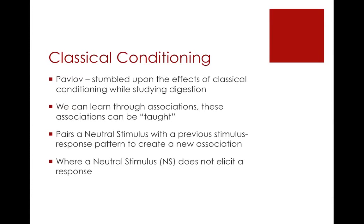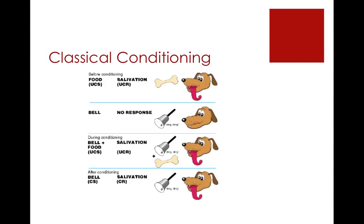In classical conditioning, we pair a neutral stimulus with a previous stimulus-response pattern to create a new association. A neutral stimulus does not elicit a response on its own — prior to the experiment, a bell would not produce a response in a dog. This principle works by pairing the neutral stimulus with an already occurring stimulus-response pattern, like a reflex. A dog will involuntarily salivate when food is placed near its mouth. So Pavlov paired a bell with food, and over time the dog learned the association that when it heard the bell, food was coming, so it would salivate. After conditioning, ringing the bell alone caused the dog to salivate because of that learned paired association.